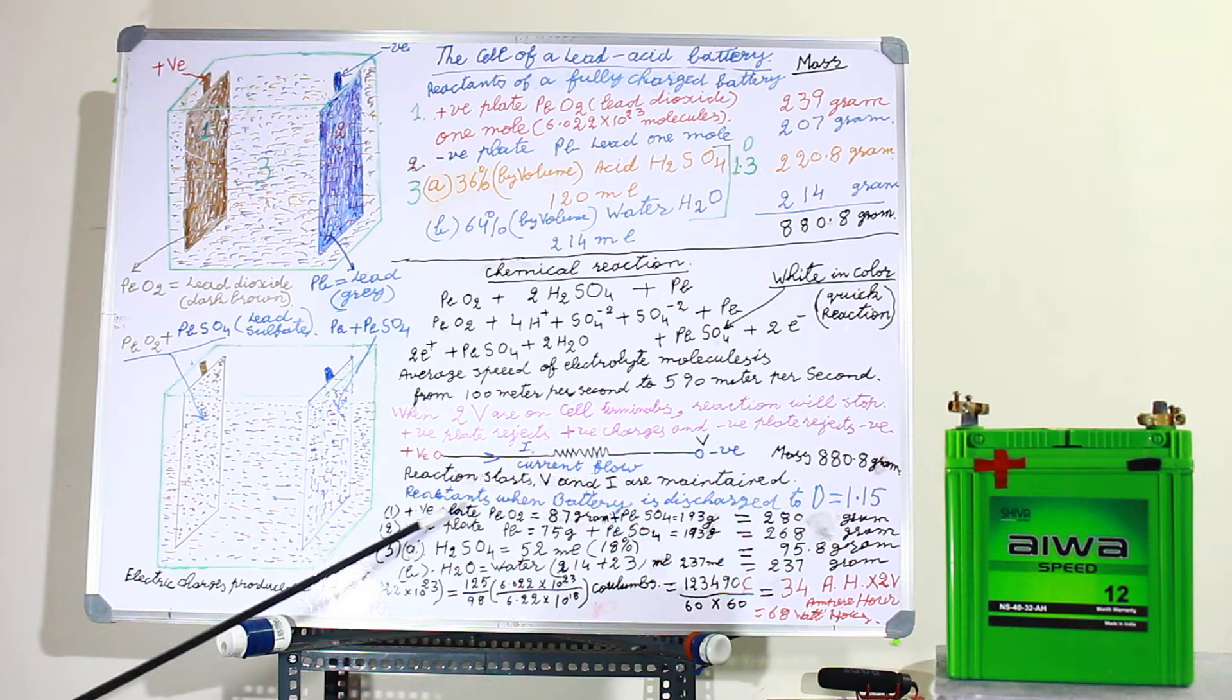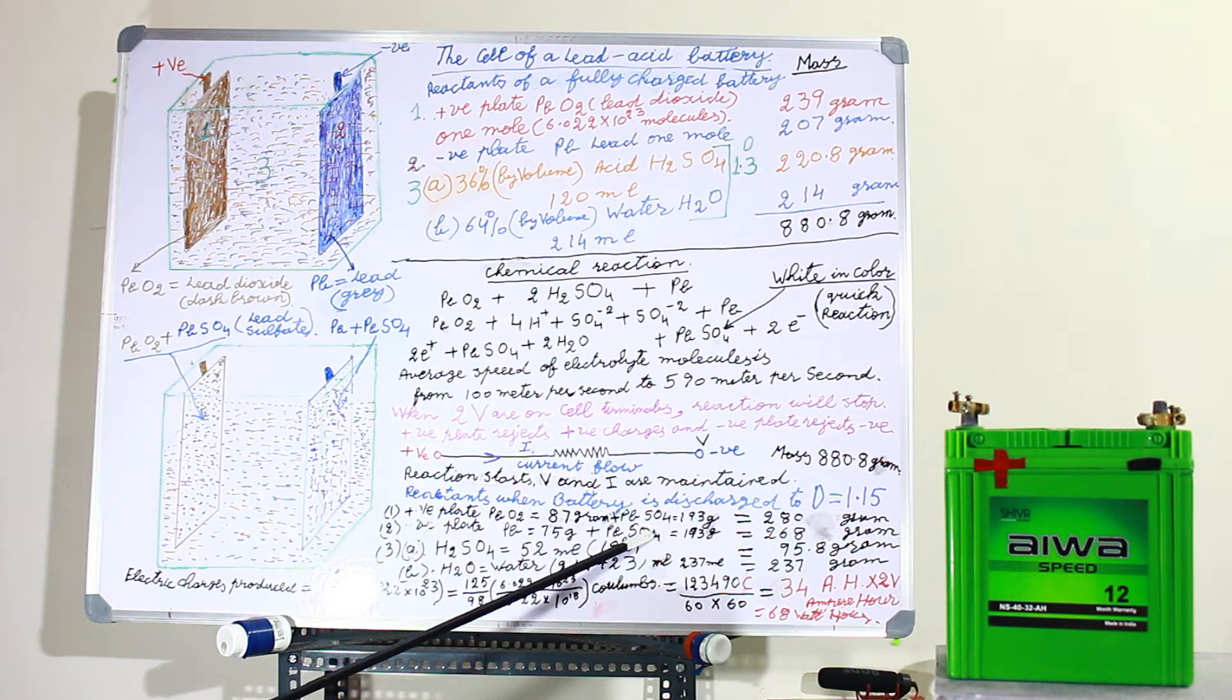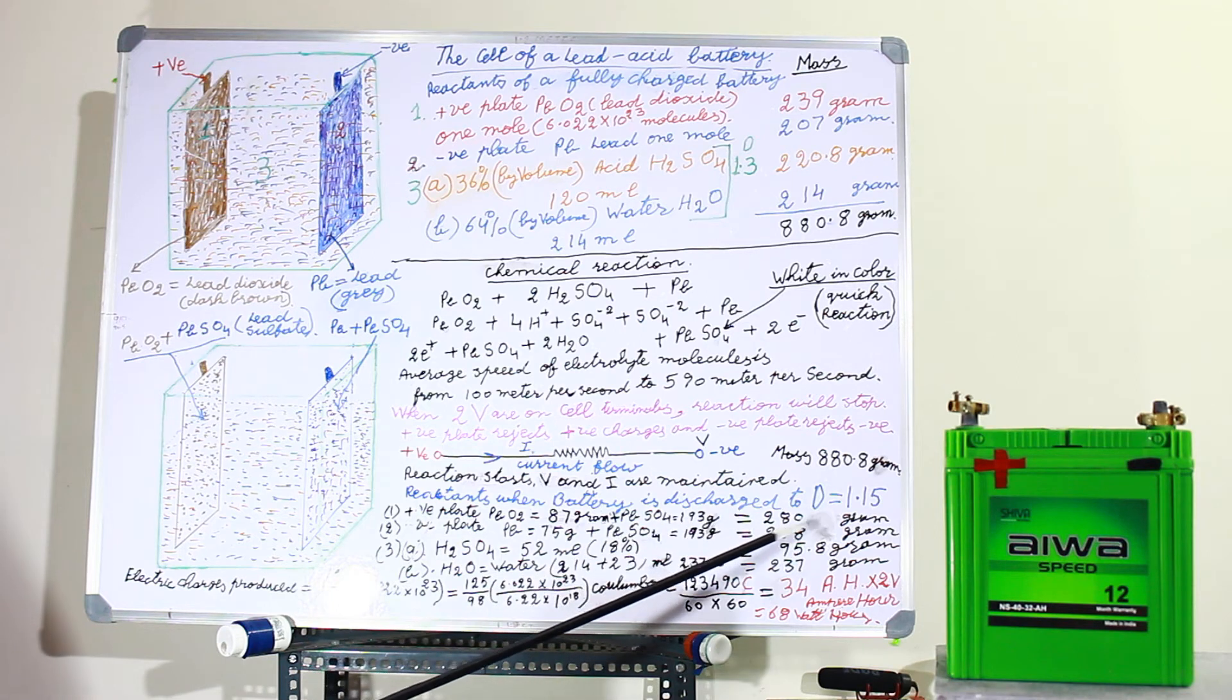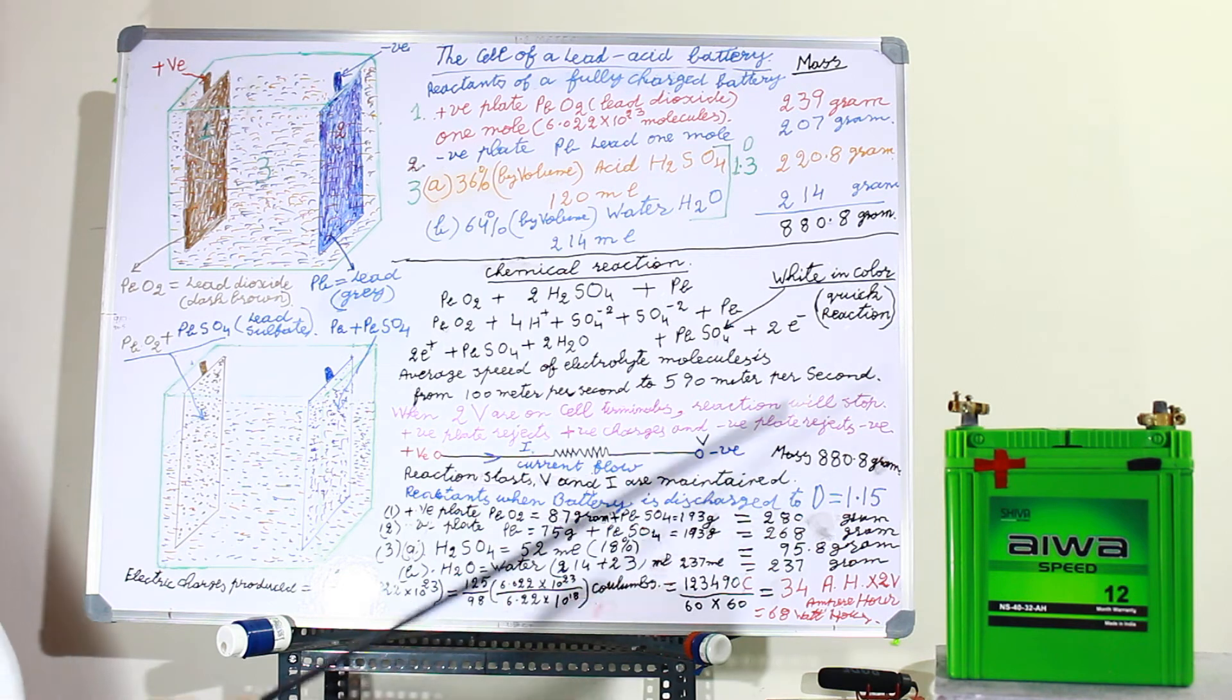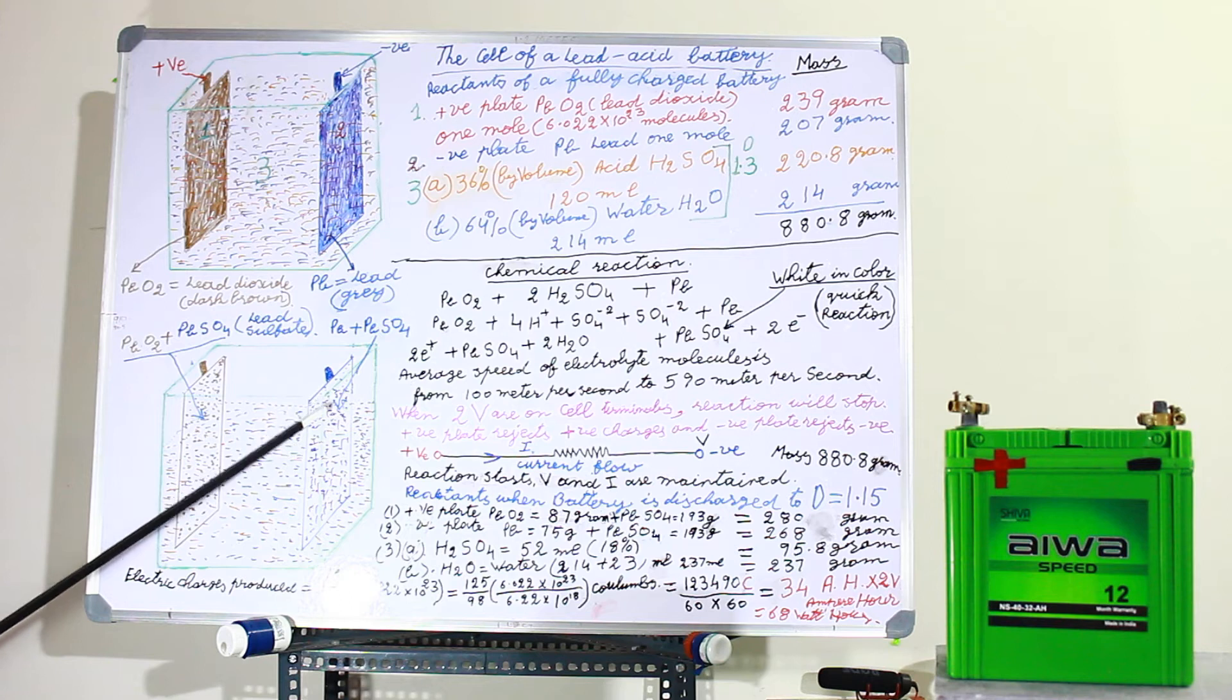So now after the battery comes to the density 1.15 red point as I have shown you in the hydrometer, the reactants. What are the reactants in it? There will be lead dioxide 87 grams and lead sulfate will be 193 grams. And the 2 will be 280 grams. It will become heavier from 239 grams to 280 grams.